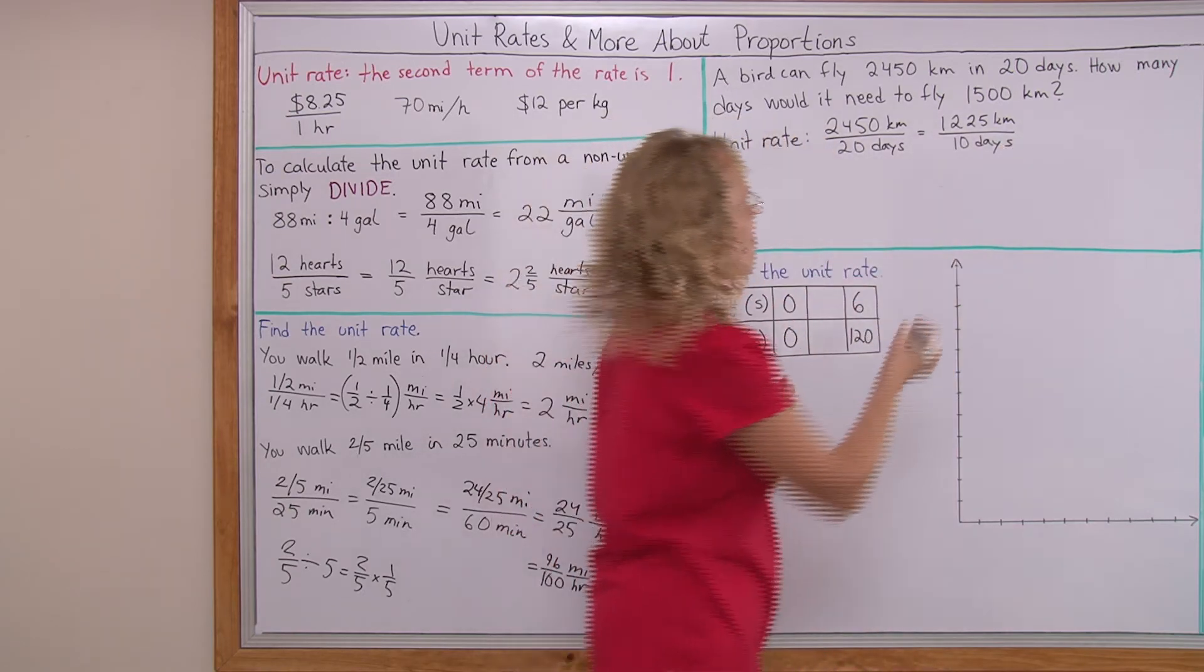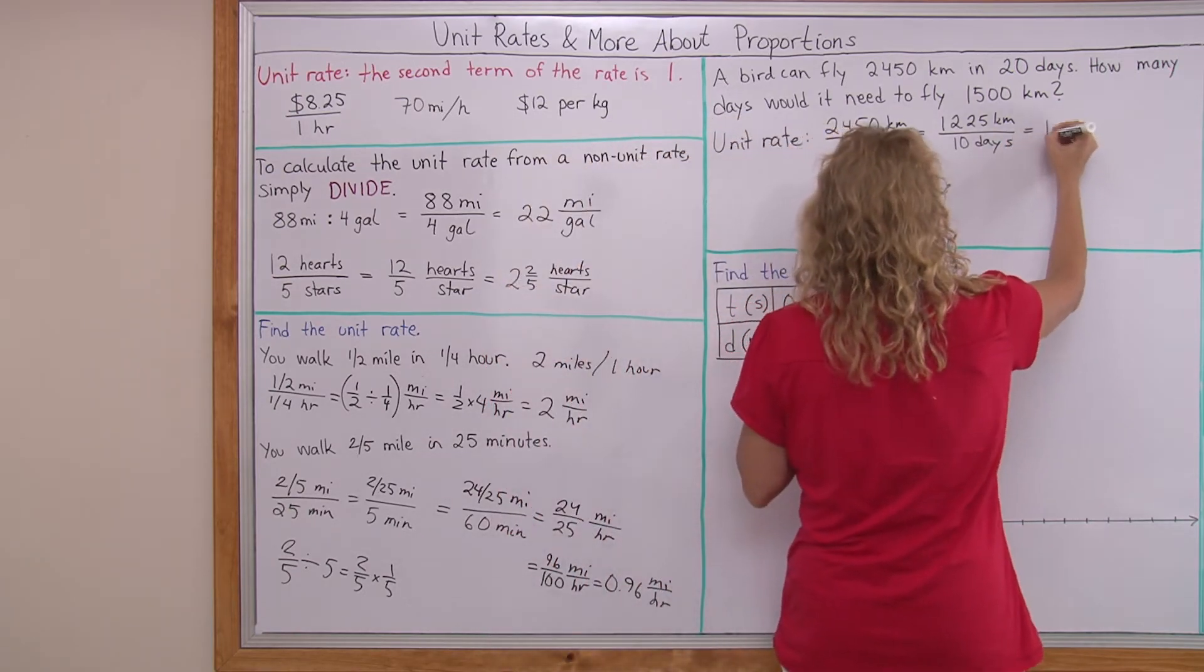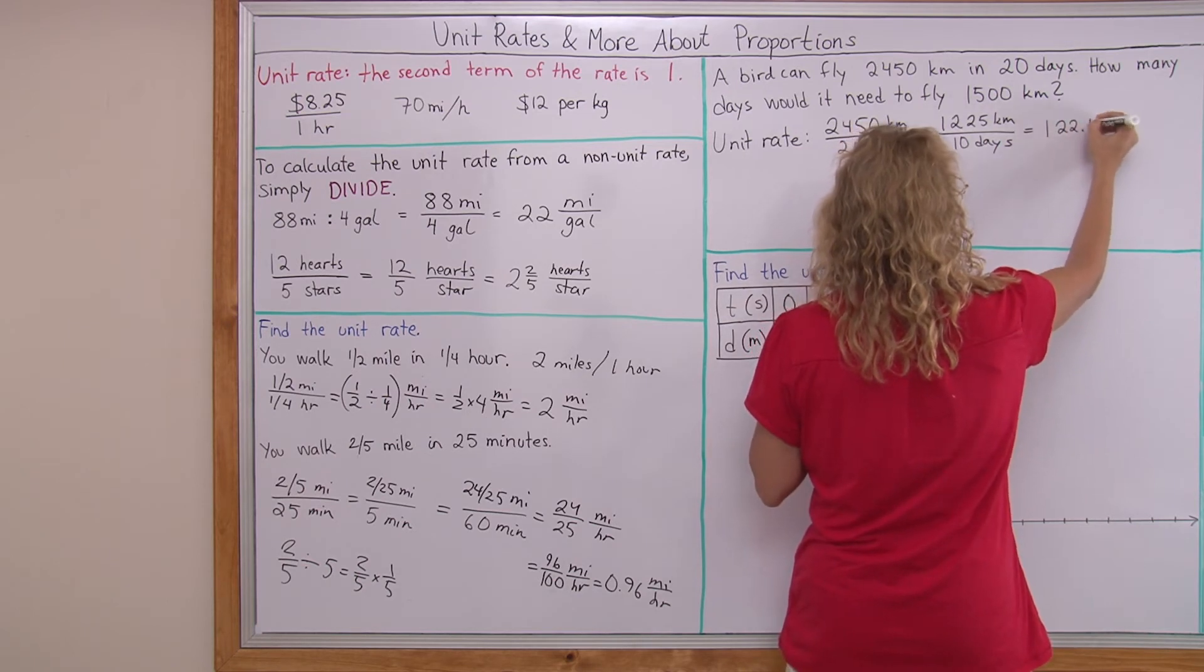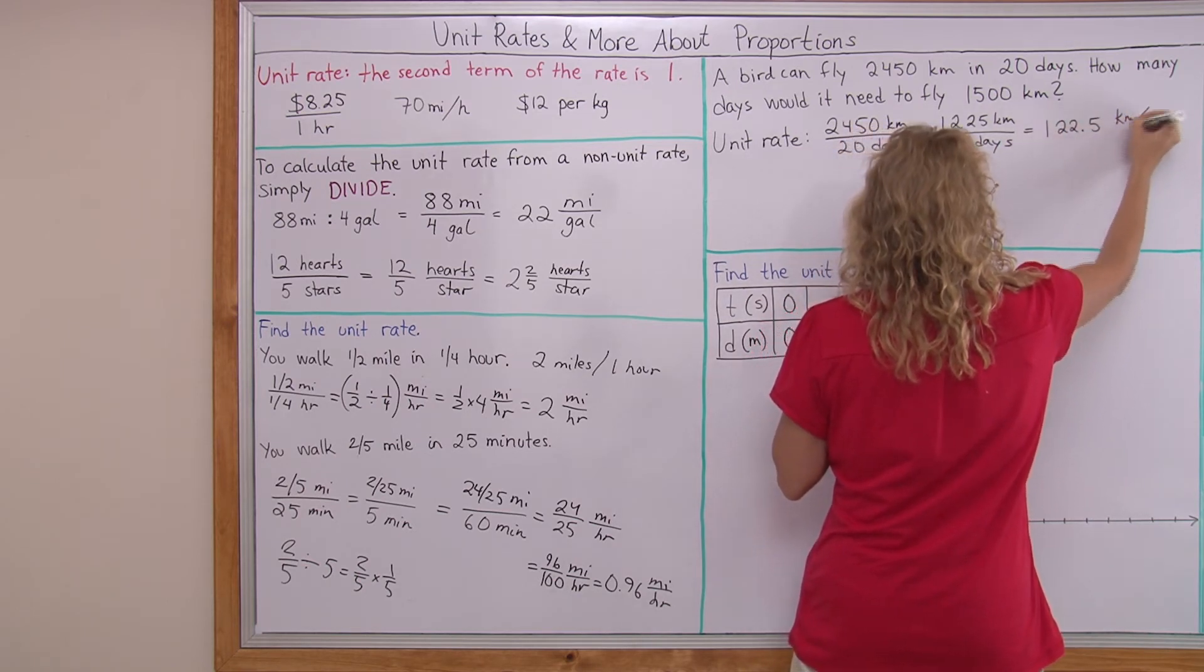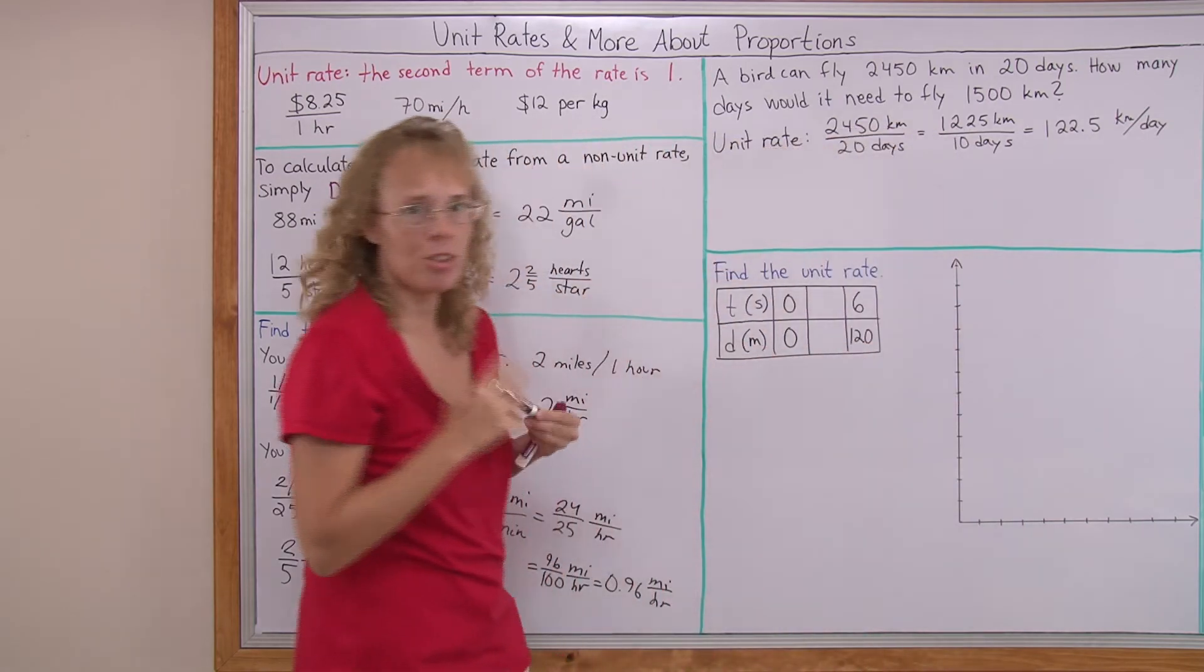And then it's easy to divide by 10. It's going to be 122.5 kilometers per day. That's the unit rate.